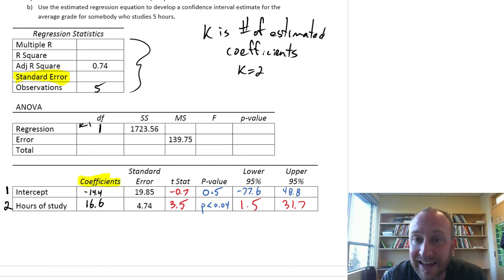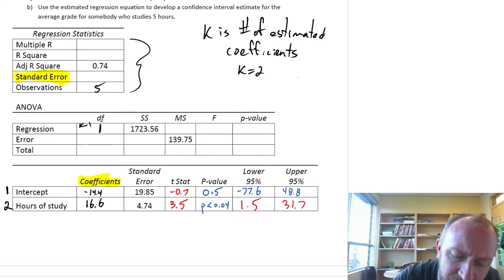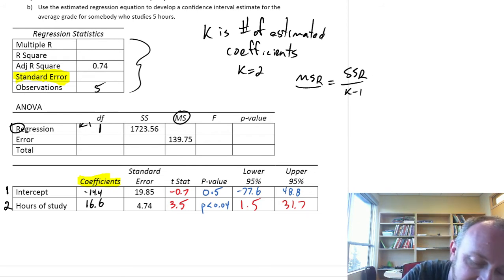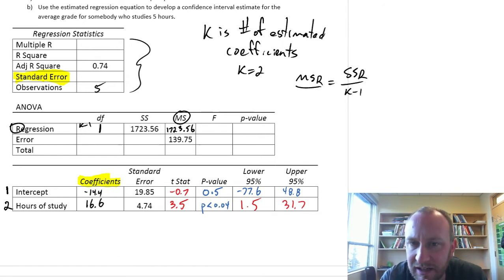As we complete that row, these formulas are all the same as any other ANOVA that you've done. So here are MSR, so that's mean squared regression, is equal to SSR divided by its degrees of freedom, k minus 1. So in this exercise, that's just one degree of freedom in the denominator, so this is 1723.56. So that one's relatively straightforward.